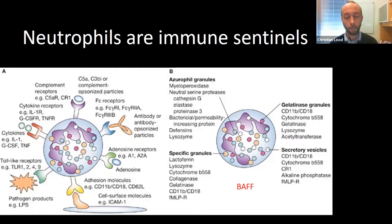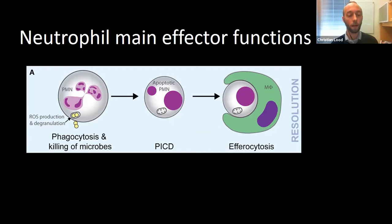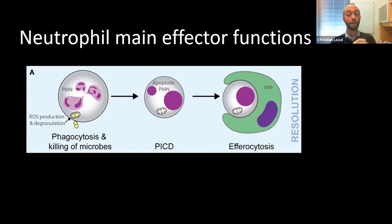Beyond degranulation, neutrophils also perform phagocytosis and ROS production — those are the three main functions we knew until recently. Once a neutrophil has used these mechanisms to combat a pathogen, it usually undergoes programmed cell death called apoptosis, where the cell shrinks, the nuclei condense, and the cell surface exposes eat-me signals facilitating clearance by macrophages in a completely silent, non-inflammatory manner, leading to resolution of inflammation.